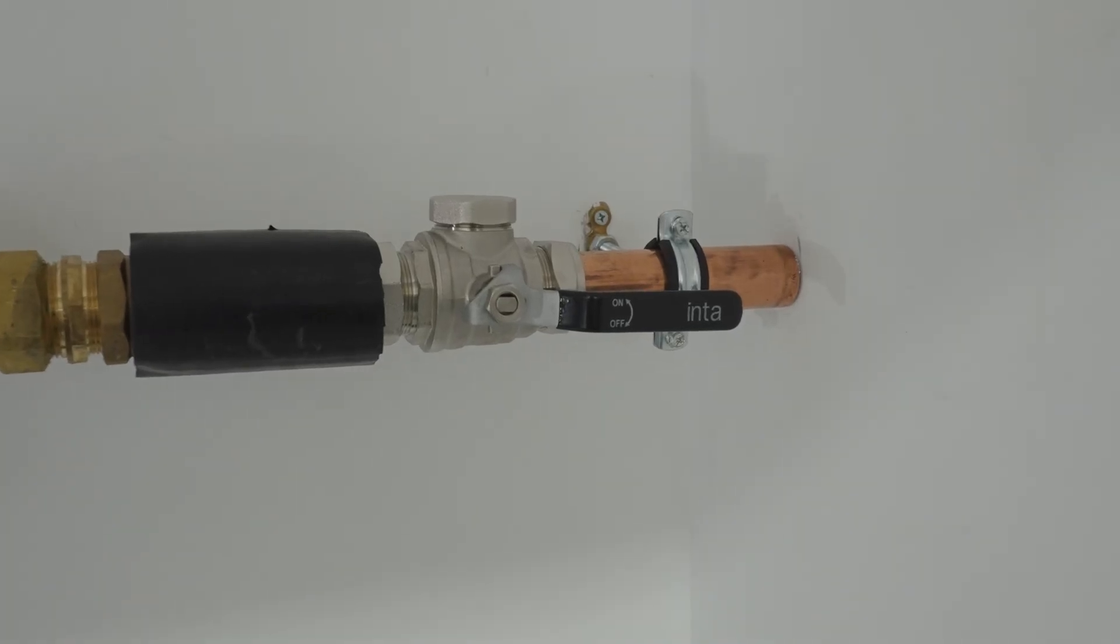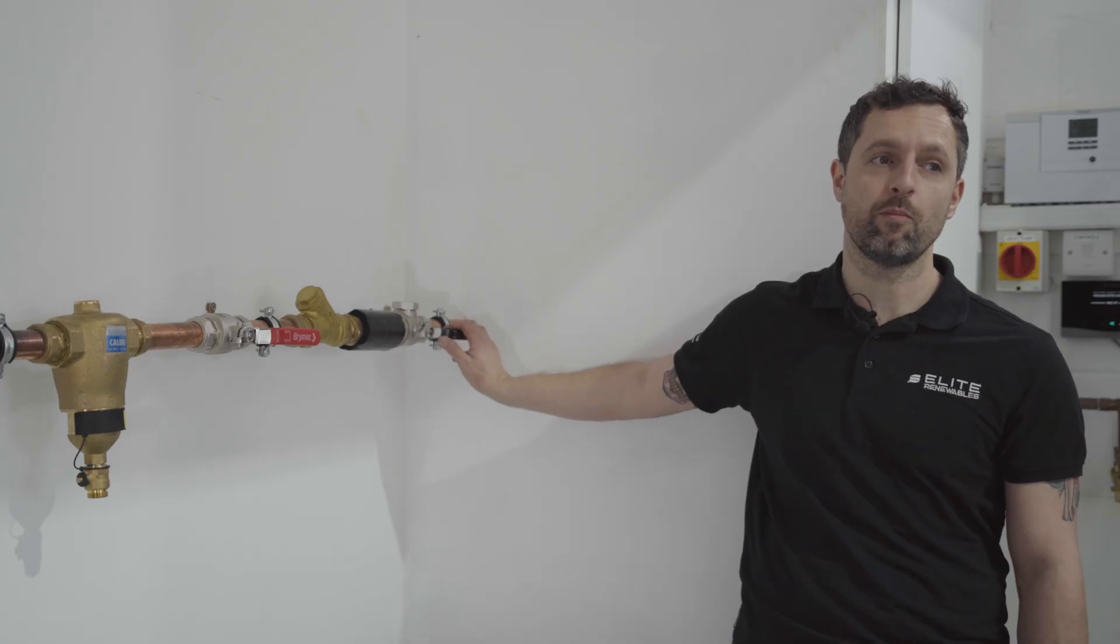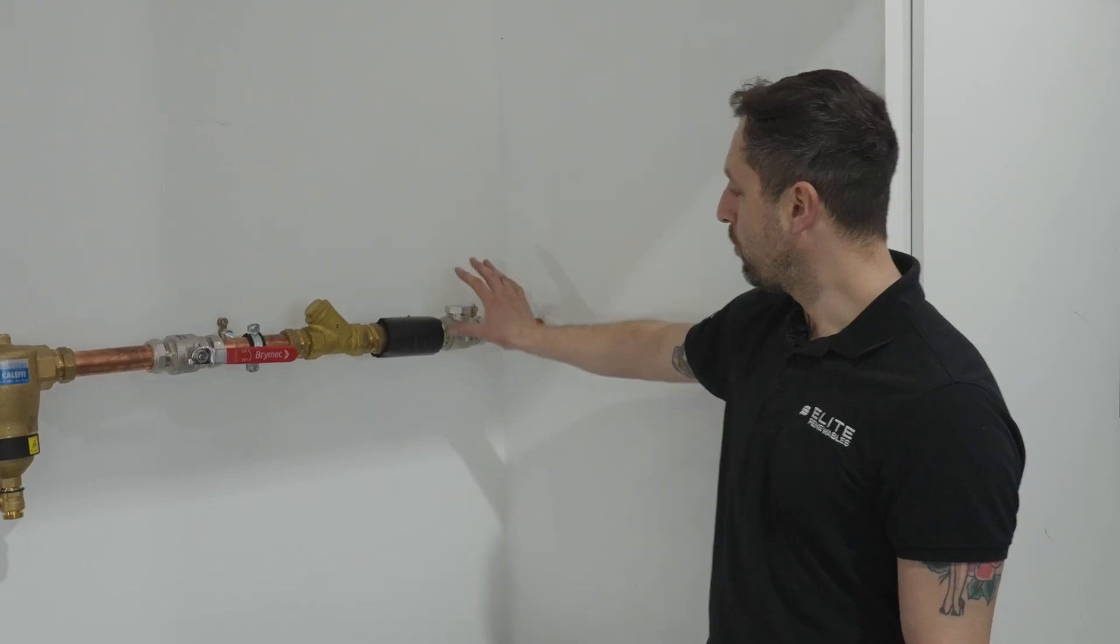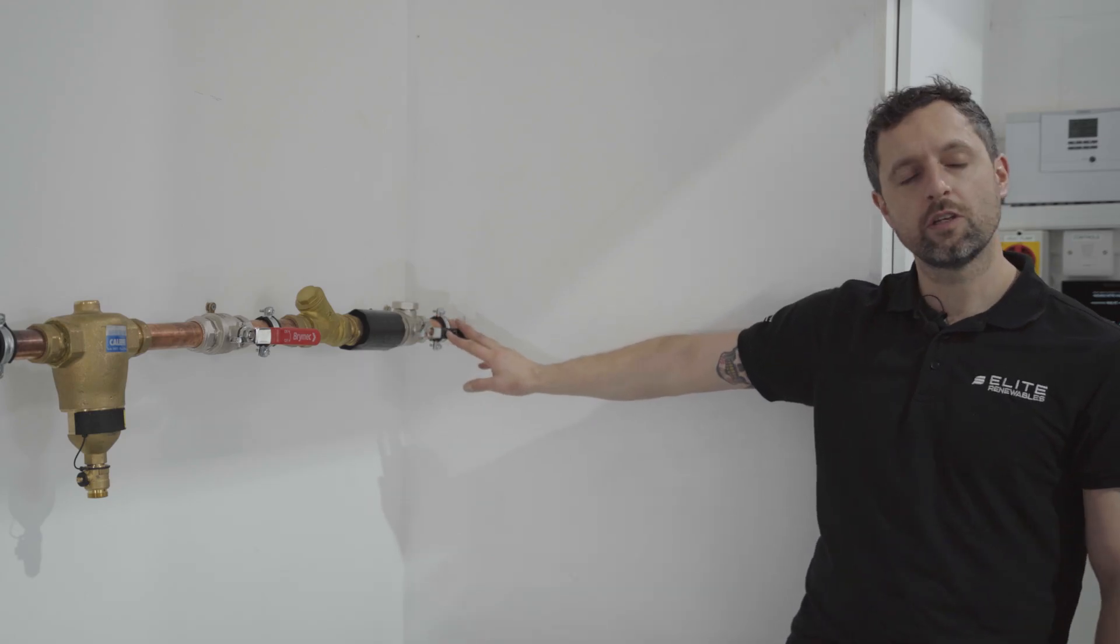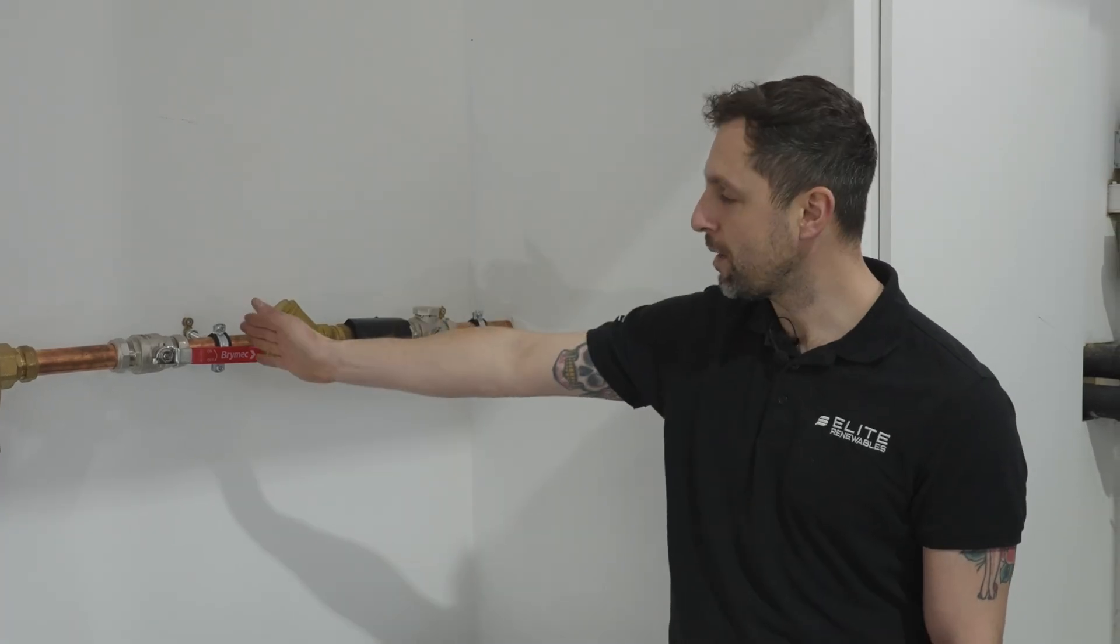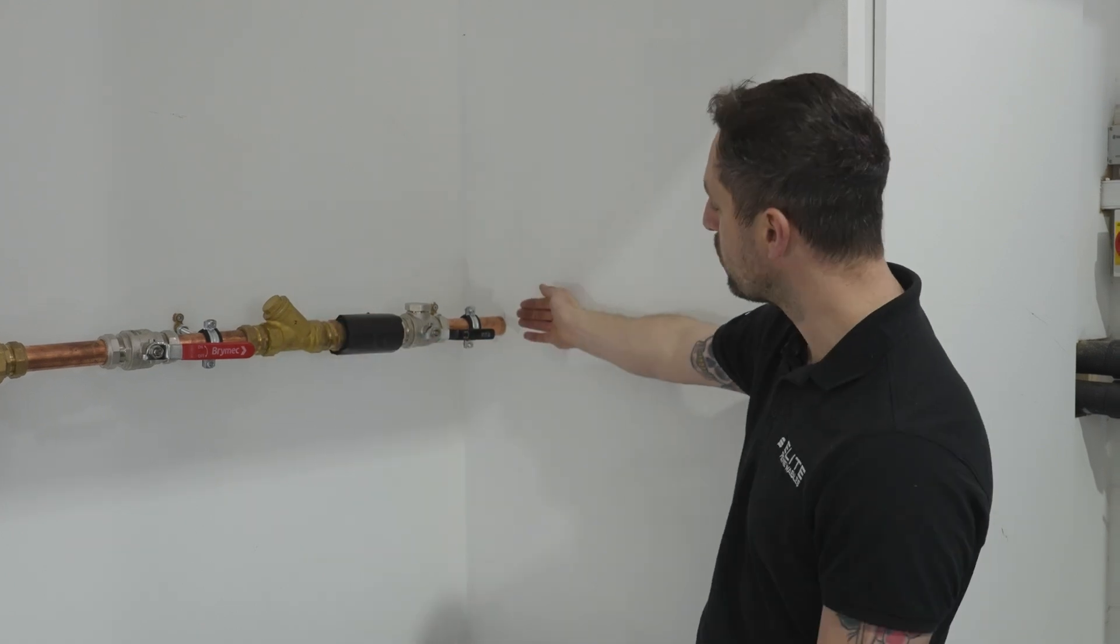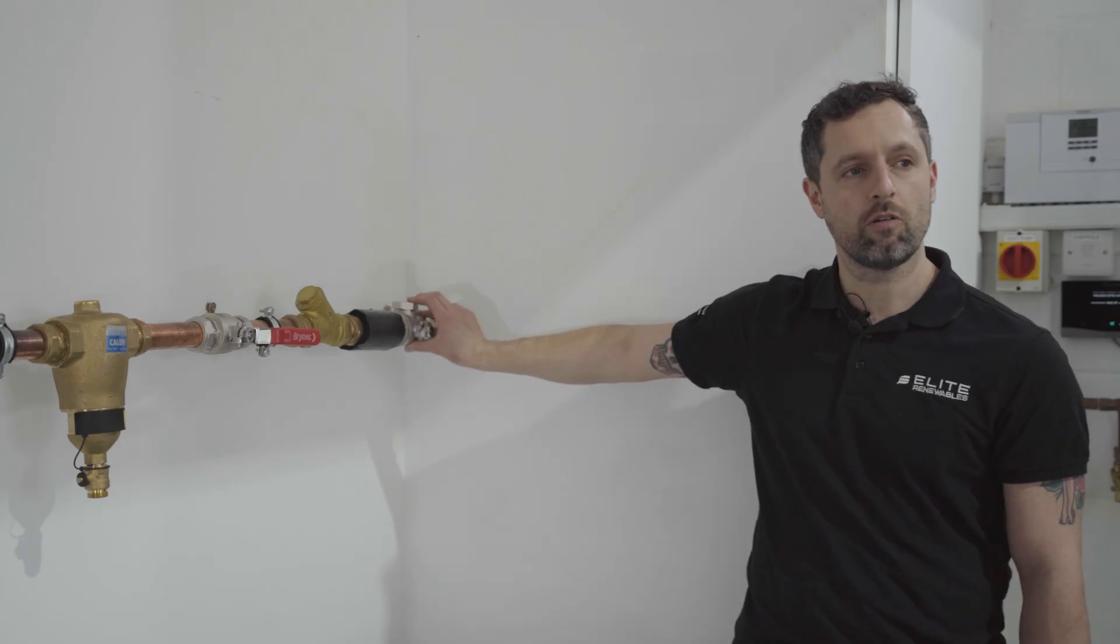So the first filter that we have here is called a filter ball. It's the most common and most recent type of filter that we do install on systems. The reason being is it's quite compact and we actually do find it's quite easy for people to clean. The filter is built into the body of the valve, so the valve is currently in the on position. If the heat pump was based on this side, what would happen is the water flowing this way would catch the deposits inside the micro gauze filter.